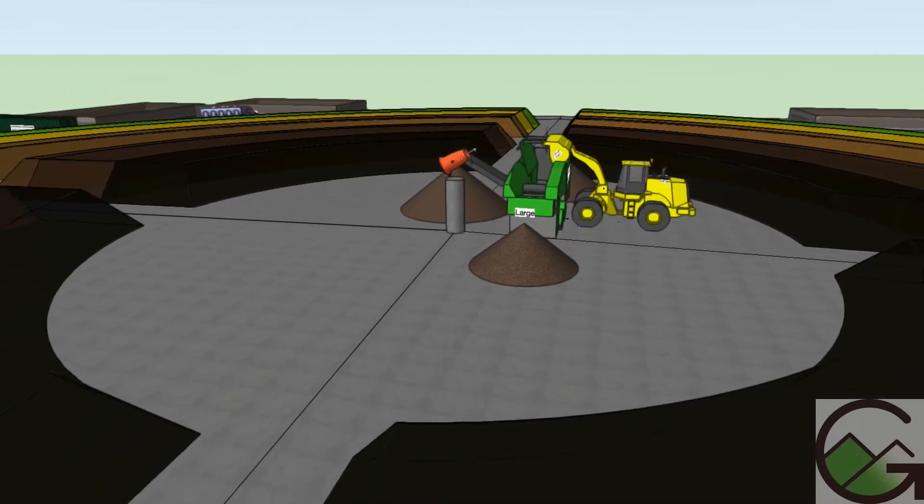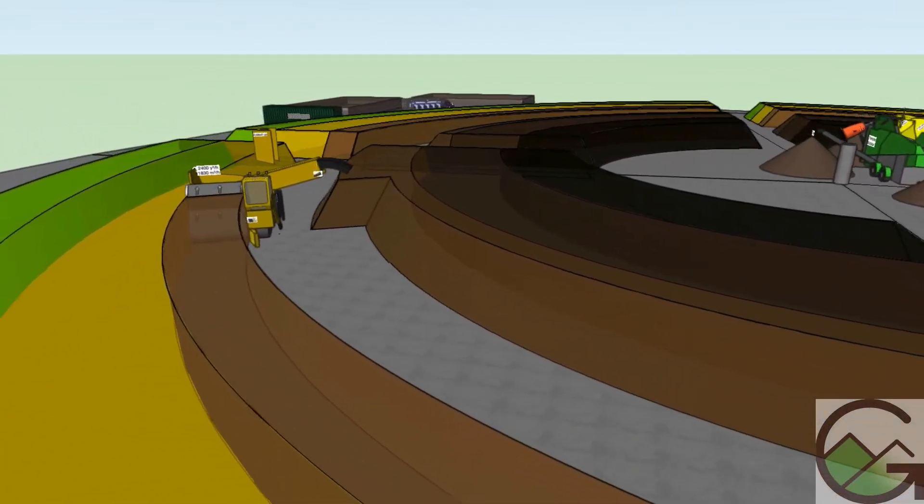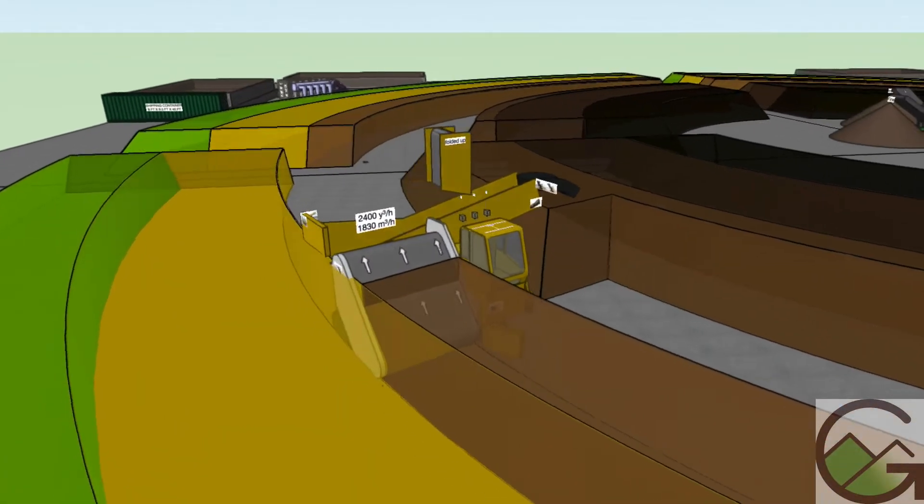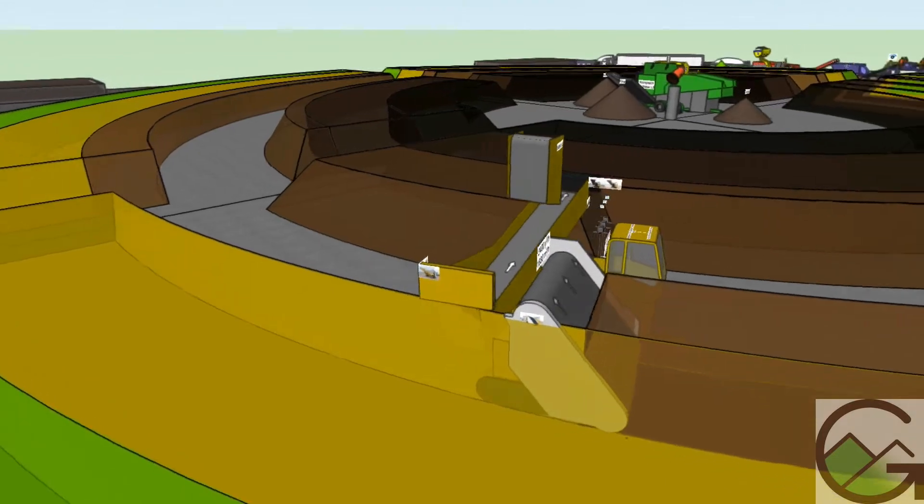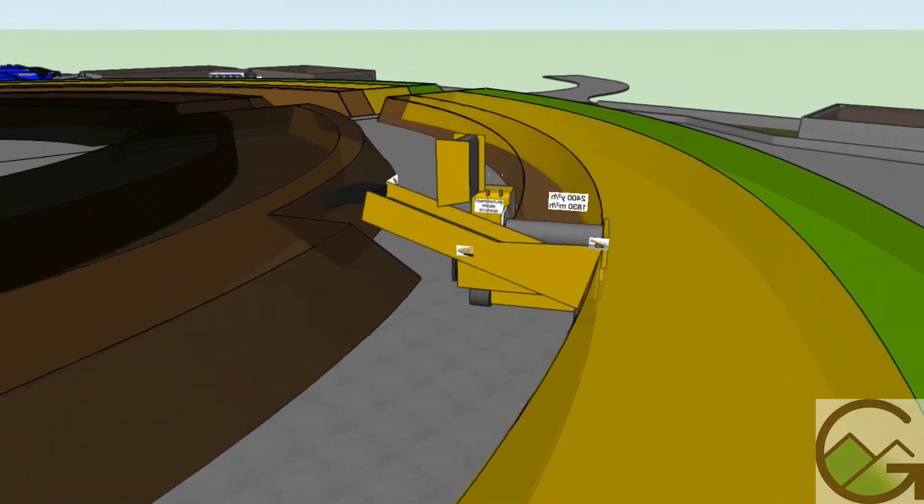Compost volumes shrink by 60%. The side discharge compost turner takes advantage of the shrinkage, keeping the pile height the same while it waters, blends, and remixes the compost inward five times over 35 days.